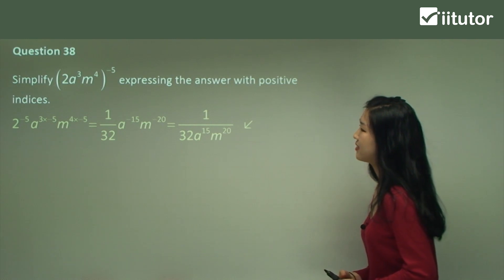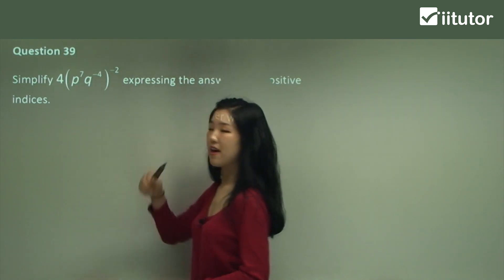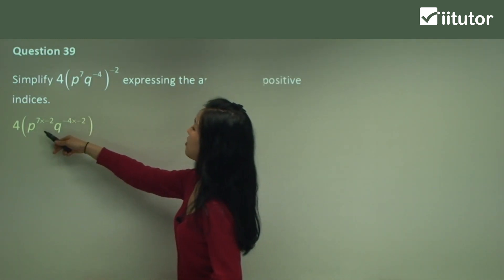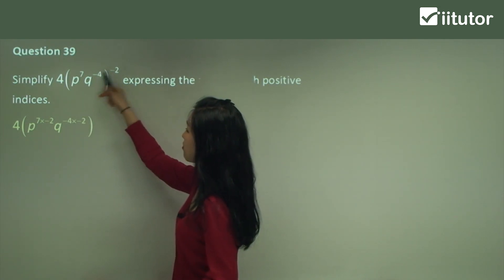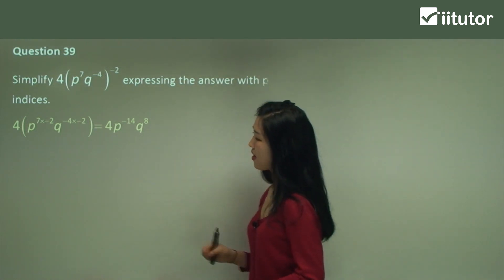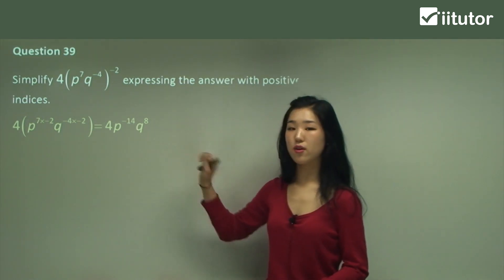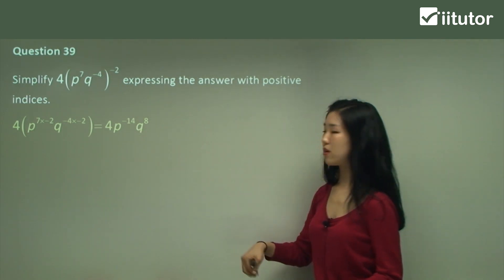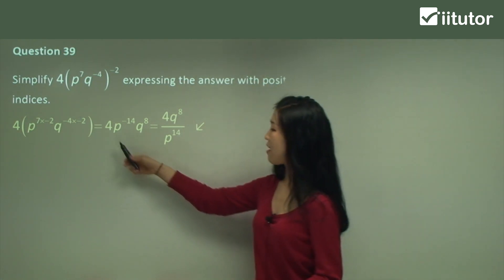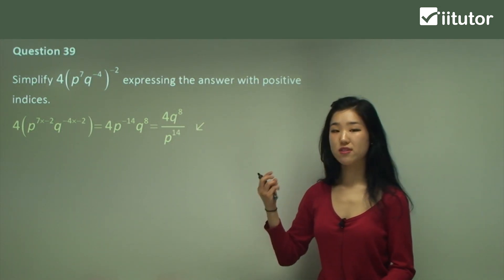Question 39. Again, we have brackets with a power, so you must power it to every single term inside the brackets. It's going to be 4 times p to the power of 7 times negative 2, and q to the power of negative 4 times negative 2. Simplify the powers. P still has a negative index, so move it down to the denominator — it becomes p to the power of positive 14. Q has a positive index, so leave it. 4 and q to the power of 8 remains on the numerator. Only change what has a negative index.